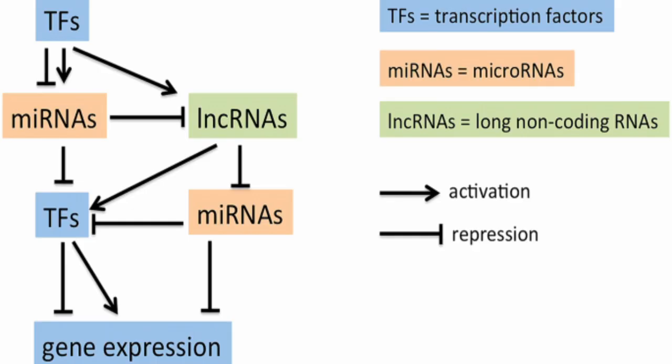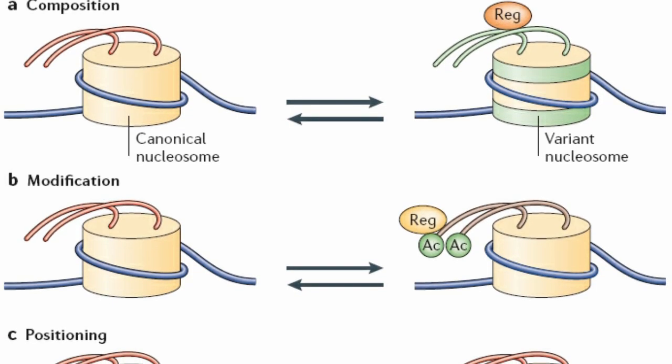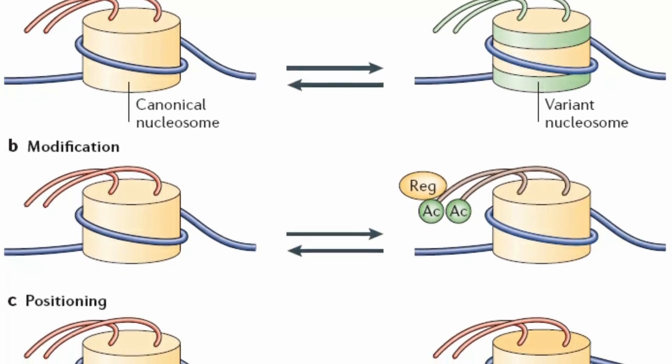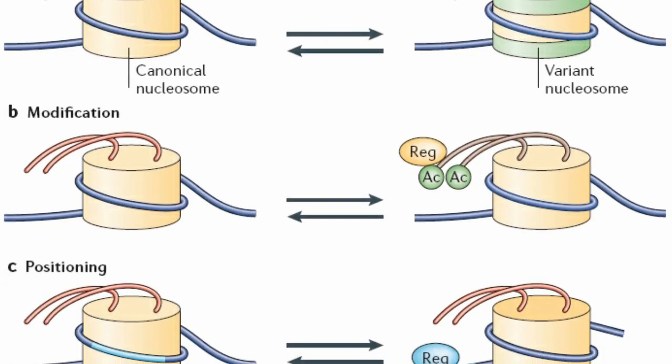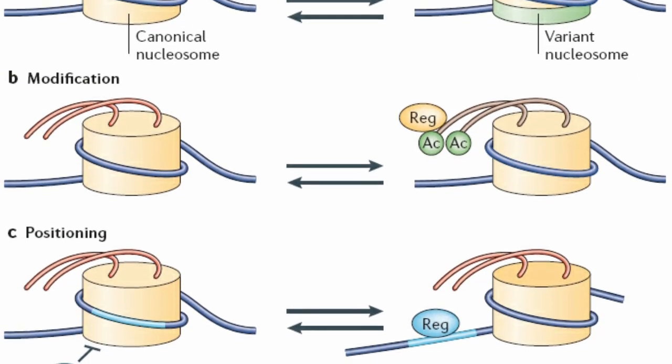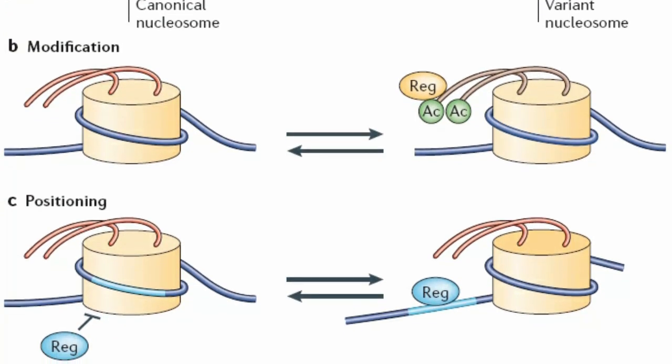RNA molecules such as microRNAs and long non-coding RNAs can interact with the epigenome to regulate gene expression. MicroRNAs, for example, can bind to messenger RNA and block translation or target messenger RNA for degradation. Chromatin remodeling complexes can physically alter the structure of chromatin to make specific regions of the genome more or less accessible for gene expression.